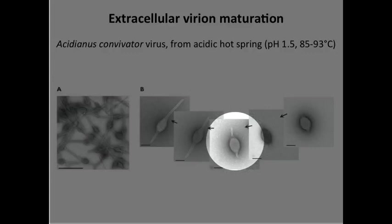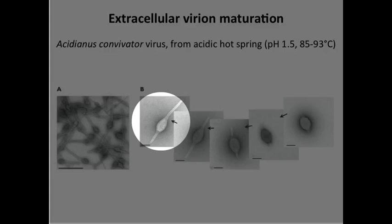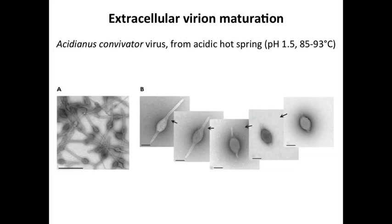There must be precursor proteins responsible for this extracellular maturation, since virions don't encode the translation apparatus. This is a pretty extreme example of maturation of a particle outside the cell — we talked about how retroviruses do this, but this goes much further. So now we have gone through an entire infectious cycle, and if you stopped learning virology at this point you would have no clue about how viruses cause disease.